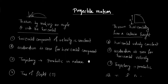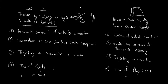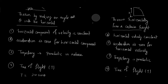For the angled projection case, the horizontal component of velocity is constant because acceleration always acts in the vertical direction. The horizontal component is u·cosθ and the vertical component is u·sinθ. Acceleration due to gravity acts in the vertical direction, but there is no acceleration in the horizontal component.